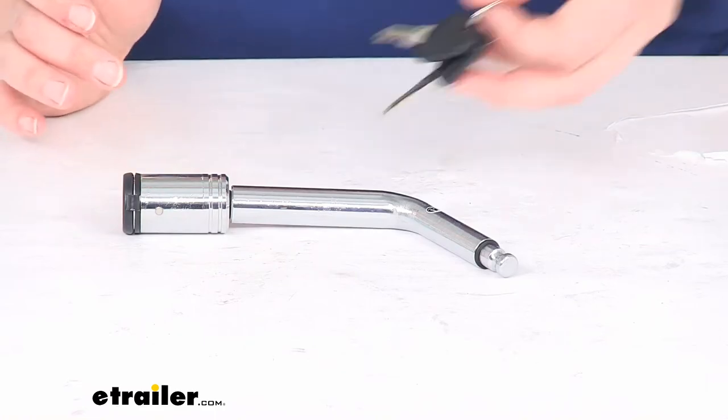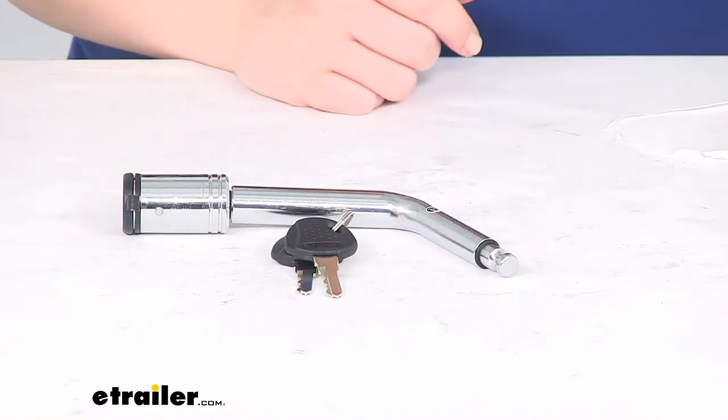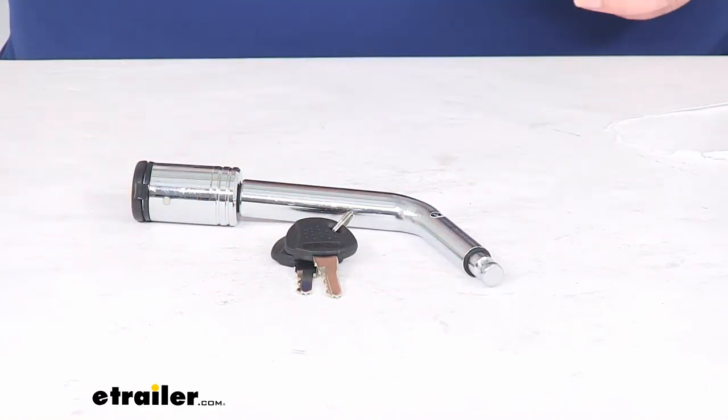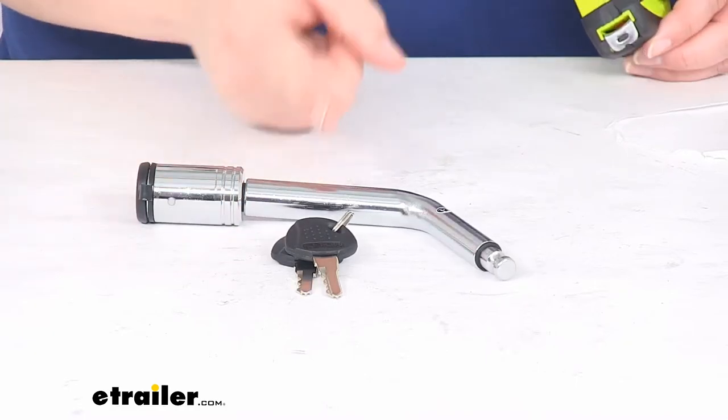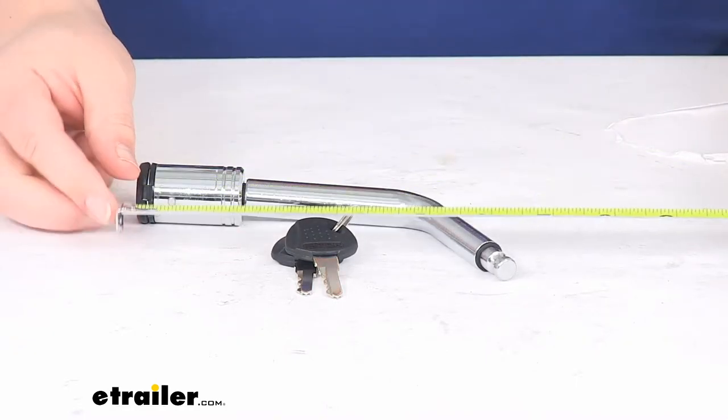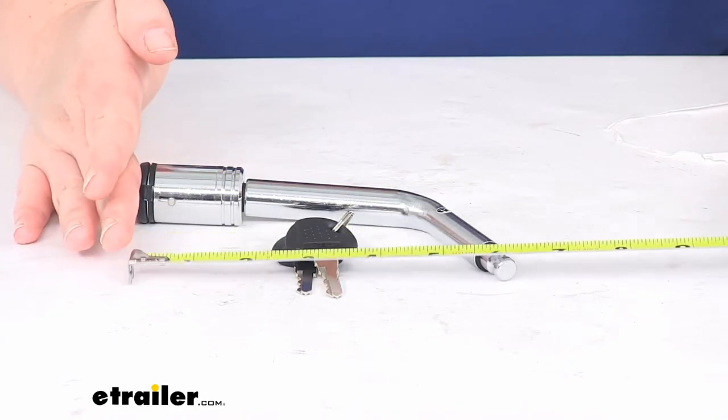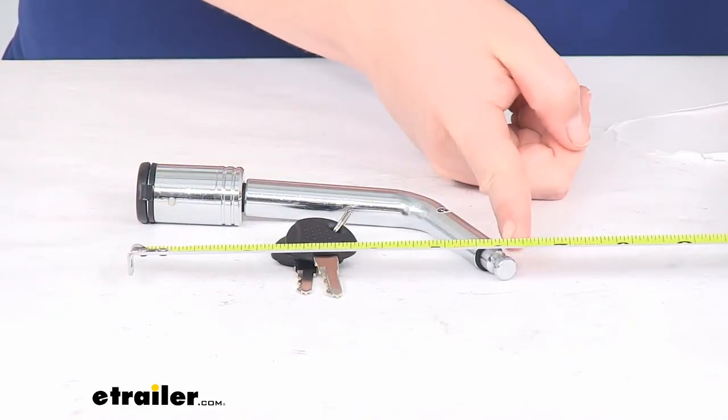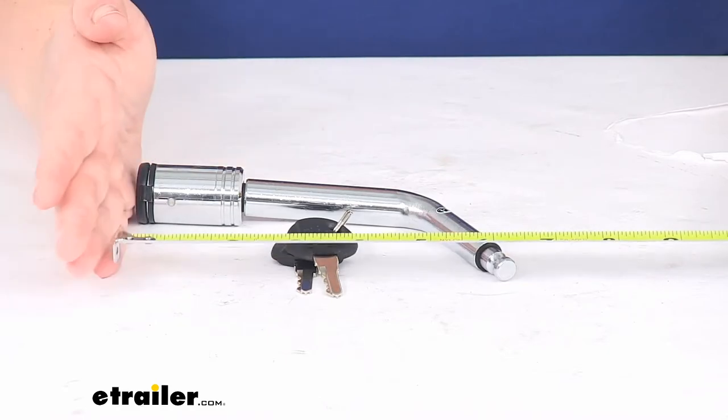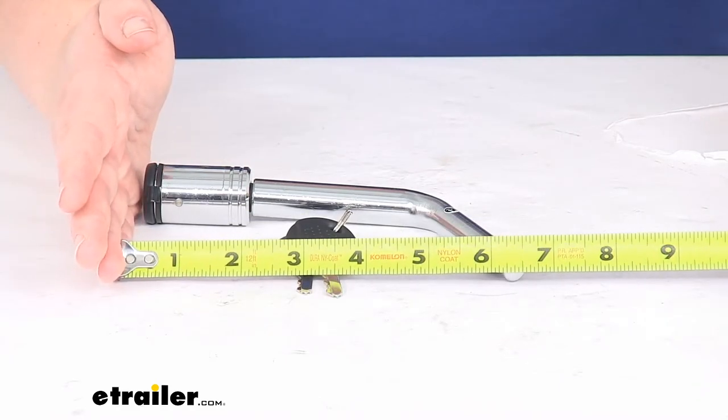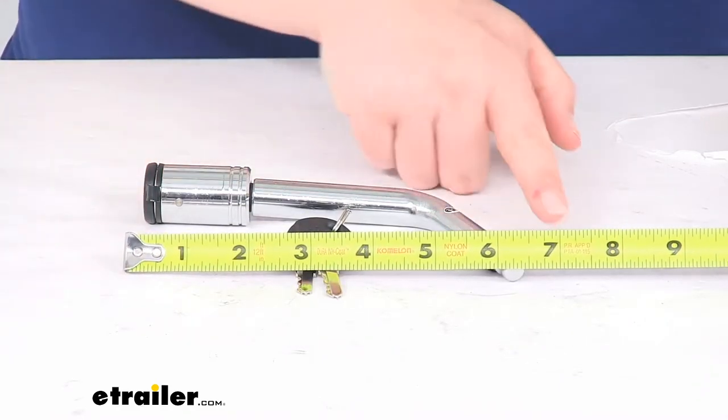As far as the length of our pin, it kind of depends on which side you're using. The Class 3 is going to be a little bit longer of a configuration. Overall, it measures about six and a half inches long from the end of the lock to the end of that pin there.